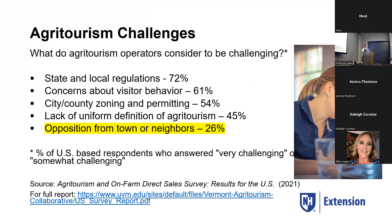Research from UVM and nationwide partners asked agritourism operators about what they consider challenging. I highlighted opposition from town or neighbors — a relatively small percentage compared to other issues — but a quarter of operators reporting this type of issue is substantial and something to pay more attention to.